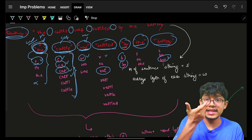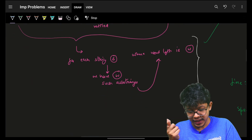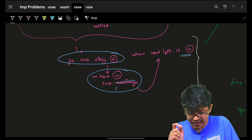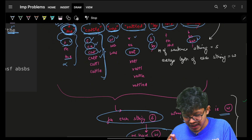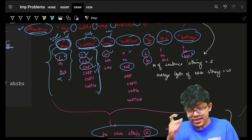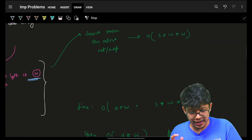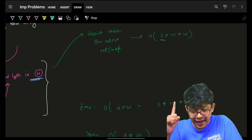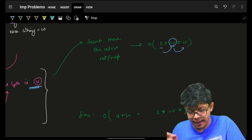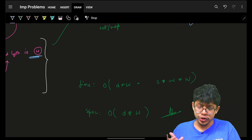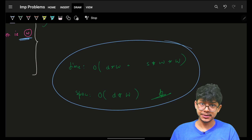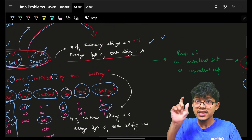For S words in the sentence each of average length W, searching all prefix strings in the hash map takes O(S × W²) time — S words, each generating W prefix strings, each of length up to W. The space is just the hash map itself, so O(D × W). Now can we do better? Yes — we keep repeating prefix string lookups, so we can use a Trie.